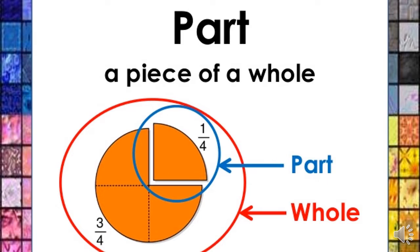We know that a fraction is a part of a whole. We can understand this from the picture: a whole represents the complete circle, and a part means a part of that circle. So a fraction can be written for anything which represents a part of a whole thing.